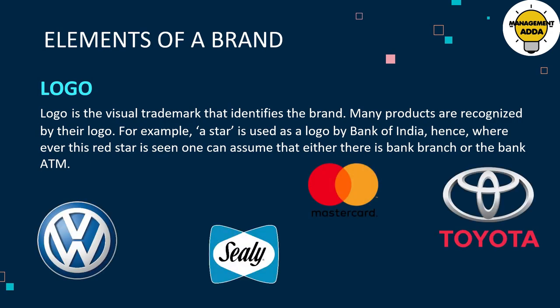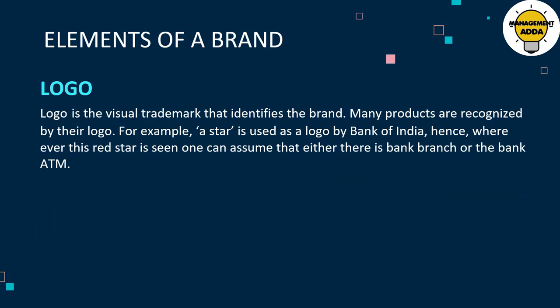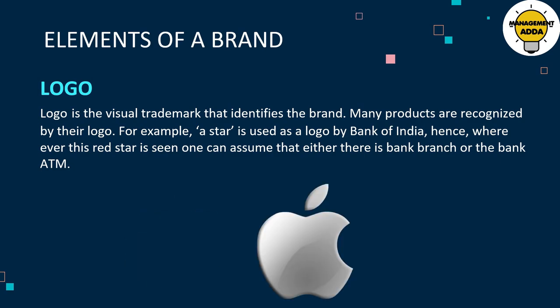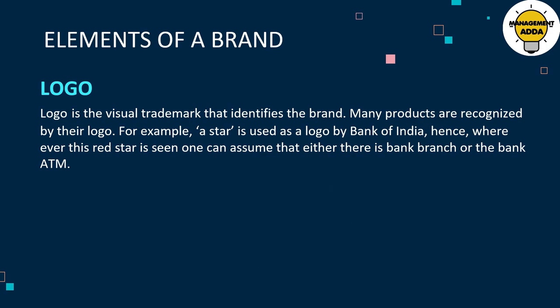The second element is logo. A logo is the visual trademark that identifies the brand. Many products are recognized by their logo. For example, a star is used as the channel name for Star Plus, or a half apple with one bite is registered with the Apple brand.